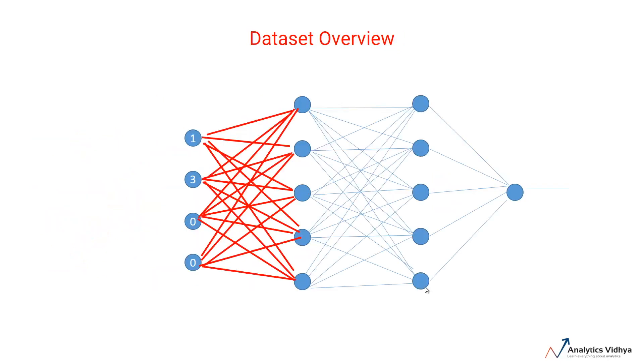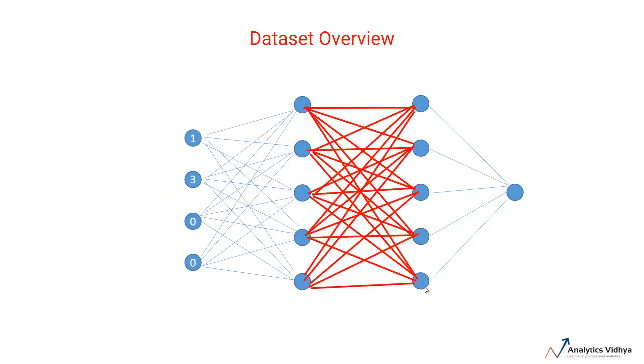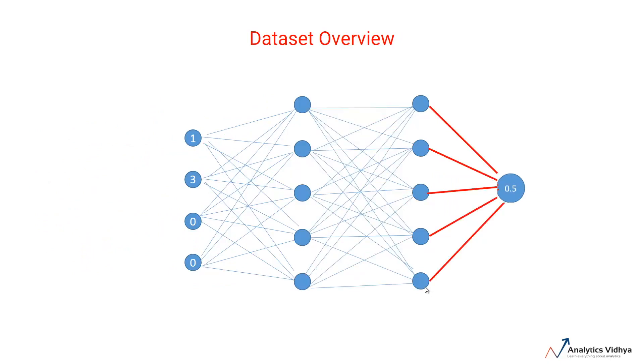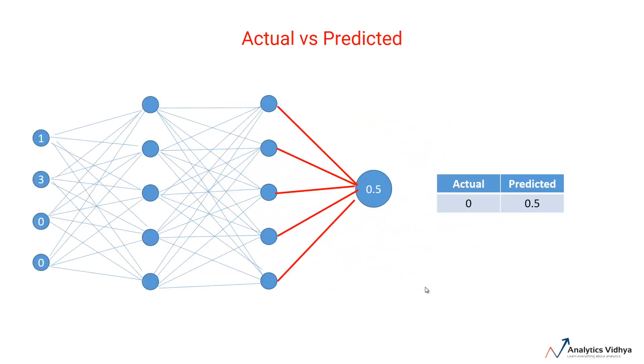We can calculate the first hidden activation simultaneously, then calculate the activation of the second layer simultaneously, and then finally calculate the output. This series of calculations which takes us from the input to output is called forward propagation.